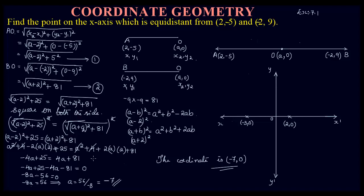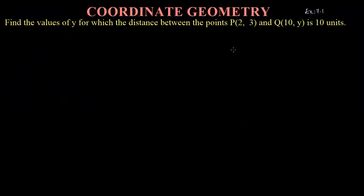To summarize: whenever a point lies on the x-axis, its y-coordinate is always 0. Assume the x-coordinate as 'a', and since it is equidistant from two points, equate the distances to find the value of the unknown coordinate.